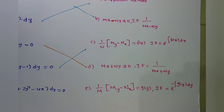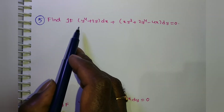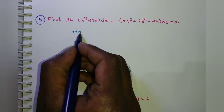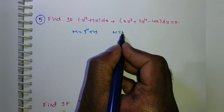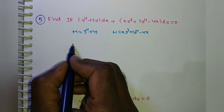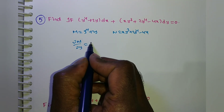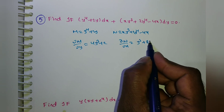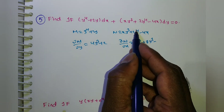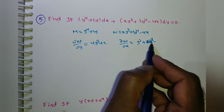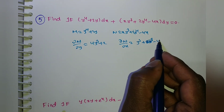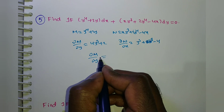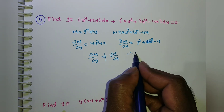Now the fifth problem: (y⁴ + 2y) dx + (xy³ + 2y⁴ − 4x) dy = 0. M = y⁴ + 2y, N = xy³ + 2y⁴ − 4x. ∂M/∂y = 4y³ + 2. ∂N/∂x: y³ is constant so ∂(xy³)/∂x = y³; 2y⁴ has no x so 0; −4x gives −4. So ∂N/∂x = y³ − 4. Are both equal? No, so this is non-exact.